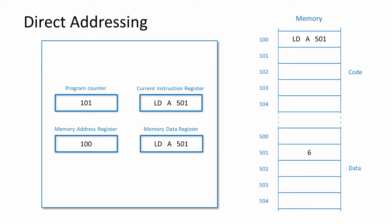If the operand is a memory address that contains the value to be operated on, it's known as direct addressing, which is also sometimes referred to as absolute addressing. With direct addressing mode, the compiler will have already calculated the effective memory address to be used and written this into the machine code. This instruction has just been fetched into the current instruction register — notice how the program counter has now been incremented. The purpose of this instruction is to load the contents of location 501 into the accumulator, so at the start of execution, the number 6 is retrieved from memory into the memory data register.